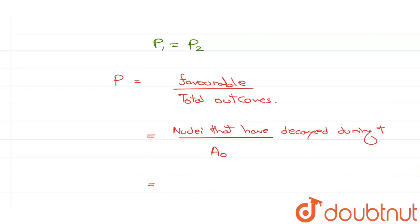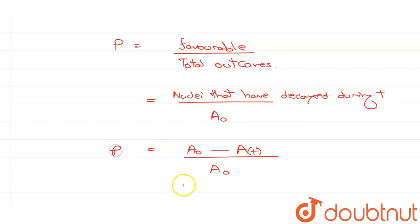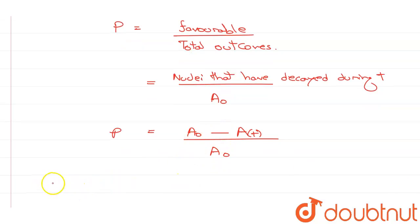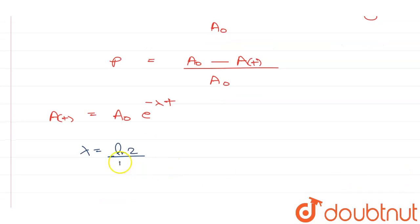The nuclei that have decayed during time interval t equals the initial number of nuclei minus the number of nuclei at the end of time interval t, divided by A₀, which gives the probability. The number of nuclei at any time t is given by A₀ e^(−λt) — note the exponent must be negative. Lambda is given by ln2 divided by t-half.